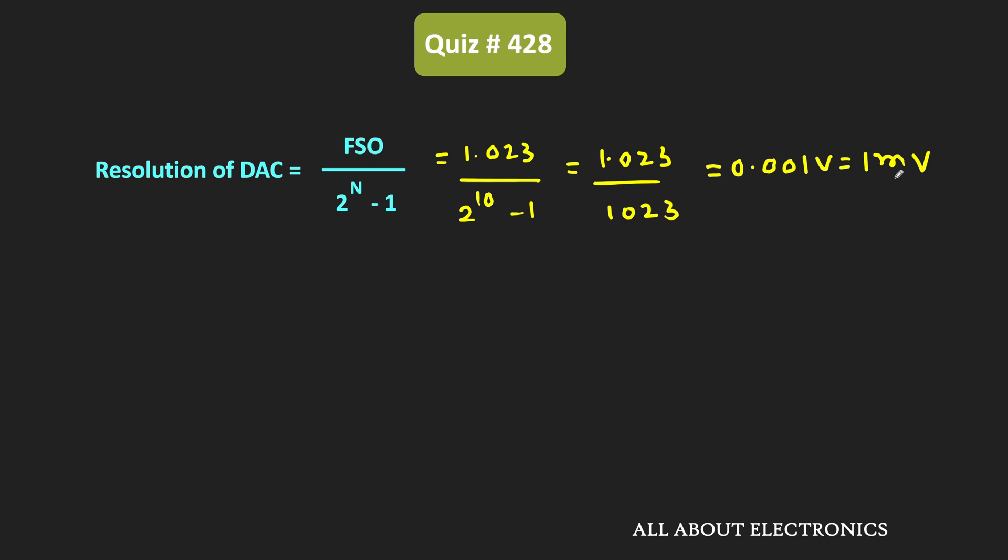In general, we can say that the change in the DAC output equals the change in the input count times resolution. In this case, the difference between the two data inputs is equal to 8 counts, and the resolution of the DAC is equal to 1mV.